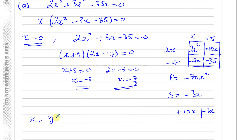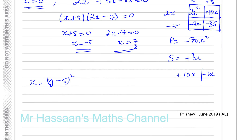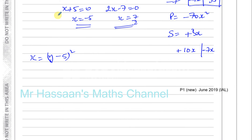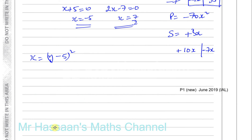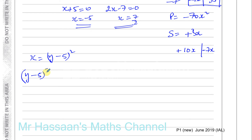We know x equals (y minus 5) squared, so for our three x values: if (y minus 5) squared equals 0, taking the square root of both sides gives y minus 5 equals 0, so y equals 5. That's one solution.